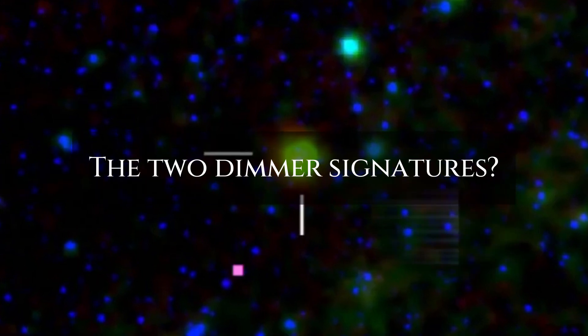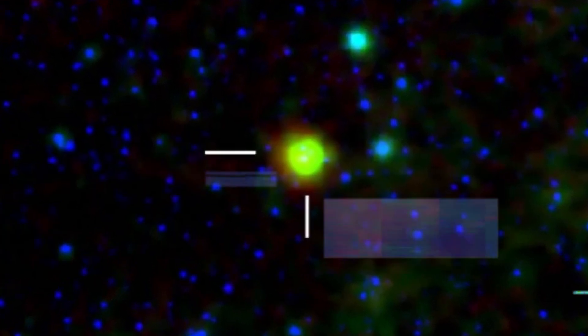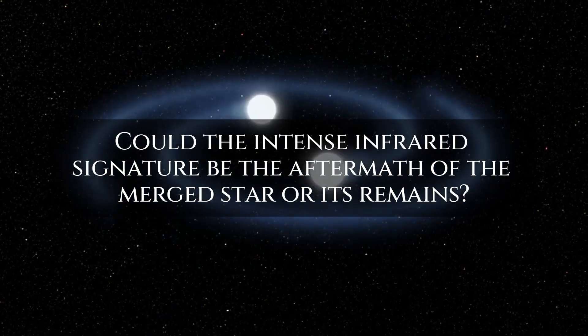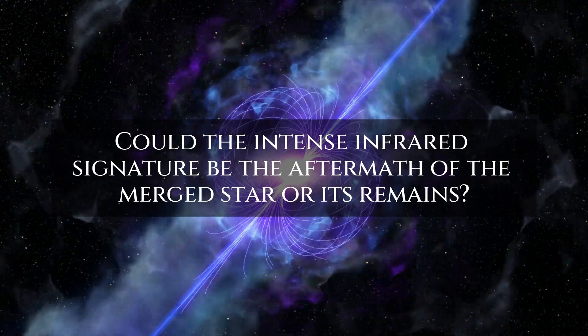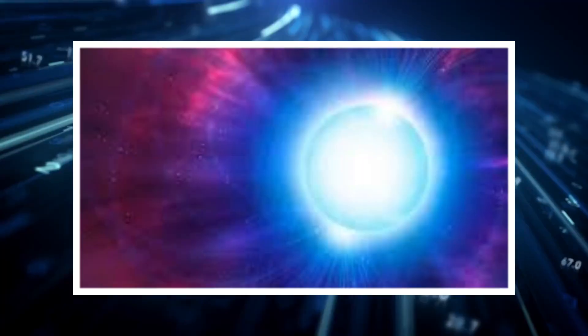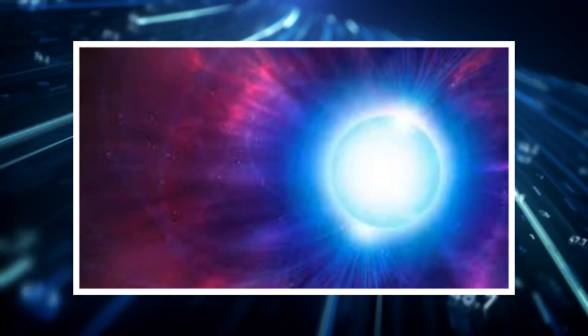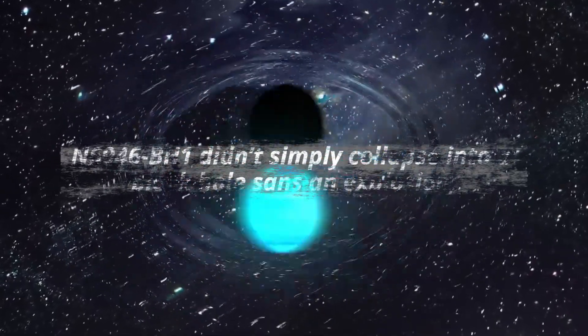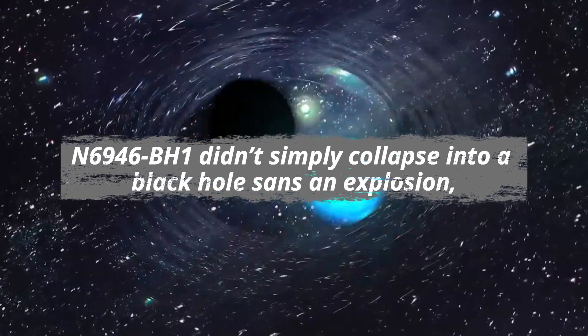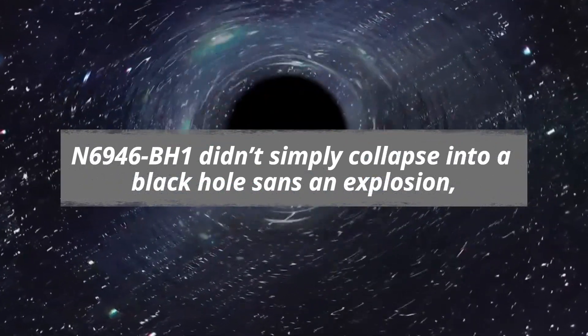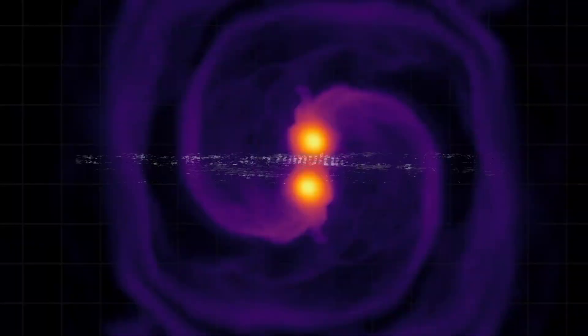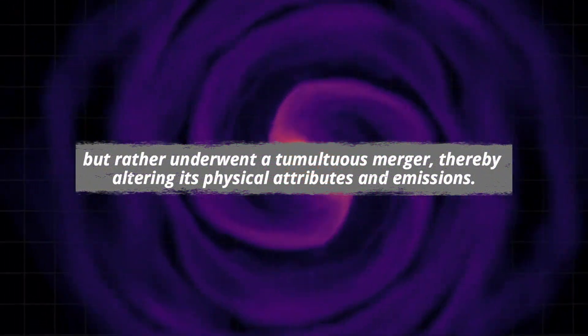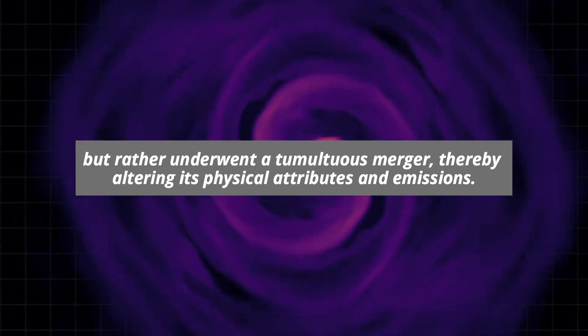The two dimmer signatures? Potentially remnants of a sibling star or its circumstellar matter. Could the intense infrared signature be the aftermath of the merged star or its remains, possibly taking the form of a neutron star or black hole? If we entertain this theory, it suggests that N6946BH1 didn't simply collapse into a black hole sans explosion, but rather underwent a tumultuous merger, thereby altering its physical attributes and emissions.